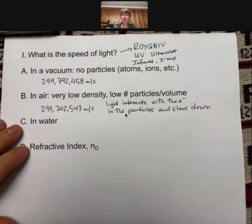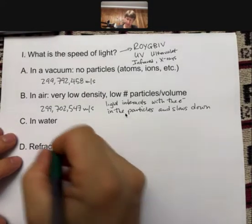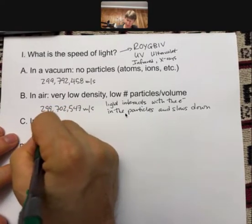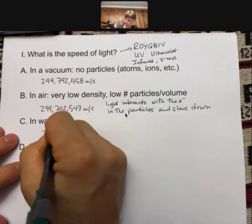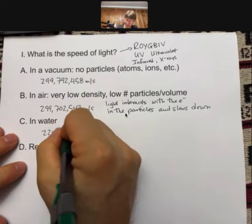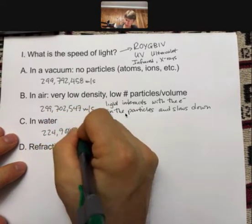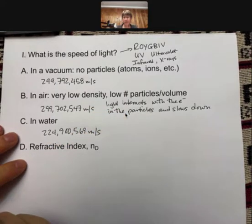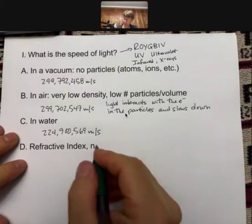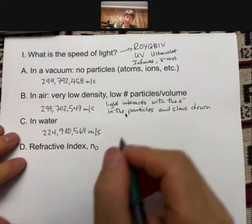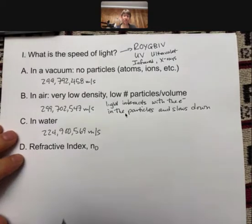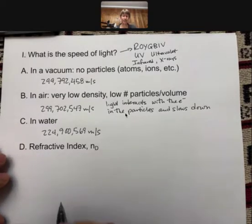More particles means more slowing down. If we're doing water, in water, the speed of light is 224 million—224,900,569 meters per second. Because water is more dense, so it has more electrons, and those electrons cause the light to slow down.